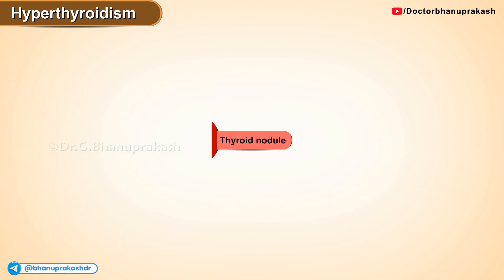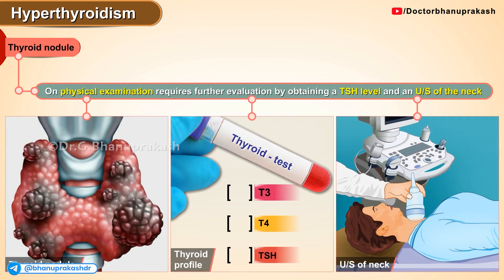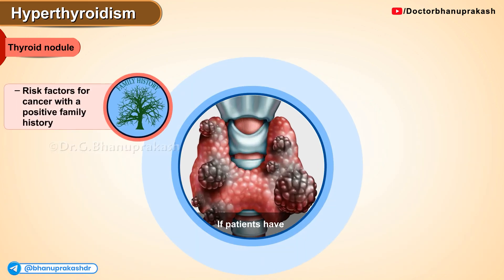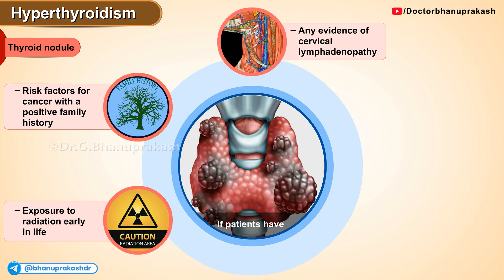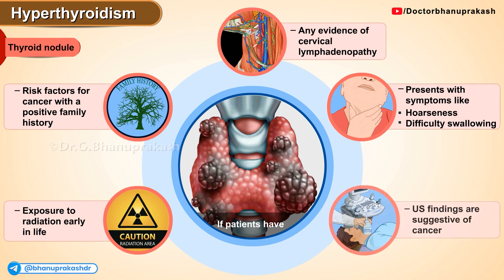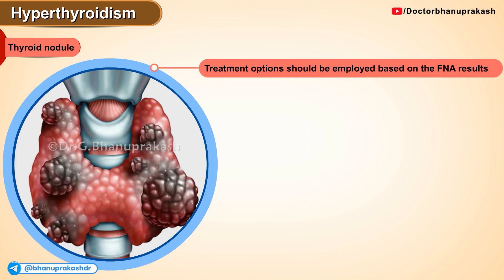Approach to thyroid nodule: A thyroid nodule on physical examination requires further evaluation by obtaining a TSH level and an ultrasound of the neck. If patients have risk factors for cancer — positive family history, exposure to radiation earlier in life, evidence of cervical lymphadenopathy, compressive symptoms like hoarseness or difficulty swallowing, or ultrasound findings suggestive of cancer — a fine-needle aspiration should be performed and treatment options employed based on the FNA results.